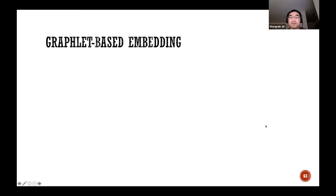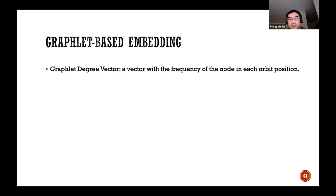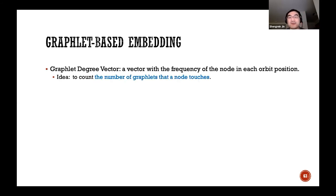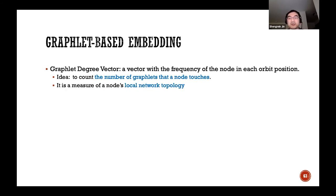For graphlet-based embedding, the general idea is to use small subgraphs or patterns to represent a node. One example is the graphlet degree vector: the main idea is to count the number of graphlets a node touches — for example, how many triangles or squares a node is in — capturing the local structure of a node and its neighborhood.